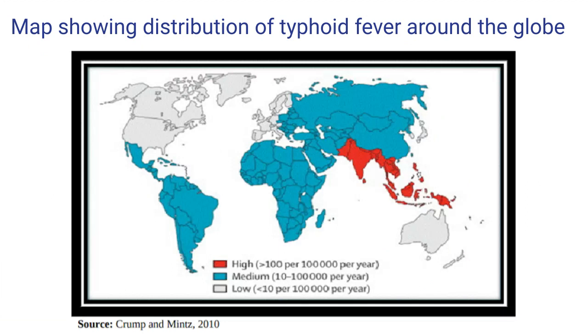This map shows the distribution of typhoid fever around the globe. India is an endemic country with a high incidence of typhoid fever.